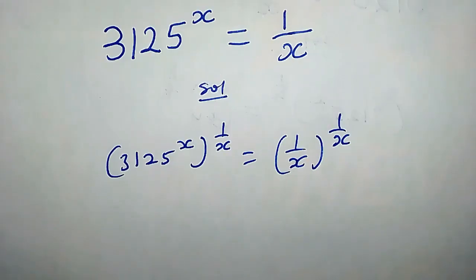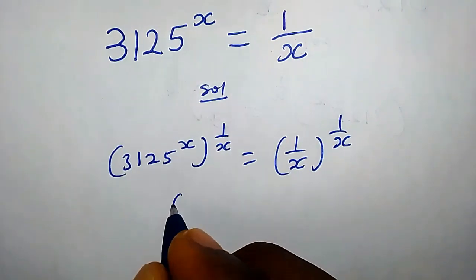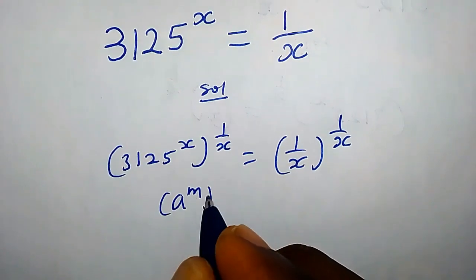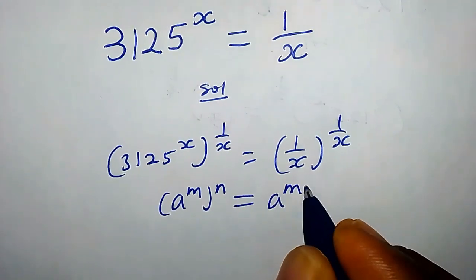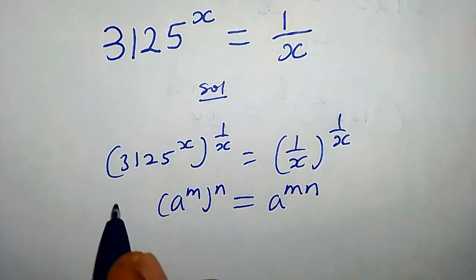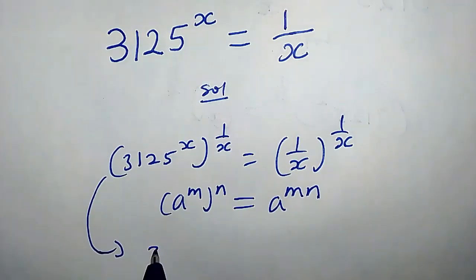Let's proceed further. Now recall that if we have a raised power m times n, this is the same thing as writing a raised power mn. So applying these properties we're gonna have 3125 raised by x times 1 over x equals 1 over x raised by 1 over x.